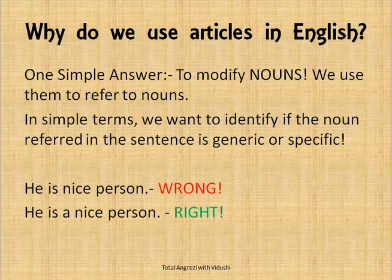Why do we even use articles in the English language? Why can't a sentence just be 'He is nice person'? That is wrong. You have to say 'He is a nice person.' The reason is that you need to modify nouns — you need to give them a reference. Nouns seem dangling without modification. In simple terms, we want to identify whether the noun is generic or specific. When I say 'he is a nice person,' I'm talking about a general nice person, so I add the article to give reference to the noun.